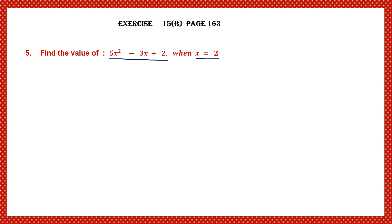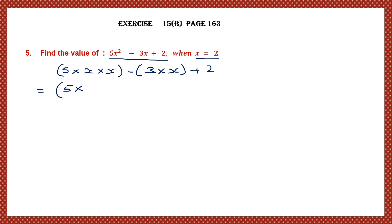So let's begin. 5x squared means 5 into x squared, which is x into x. So we'll put that in brackets, minus 3 into x, plus 2. So wherever there is x, we're going to substitute it with its value, and it's given as x equals 2. So: 5 into 2 into 2, minus 3 into 2, then we have plus 2.